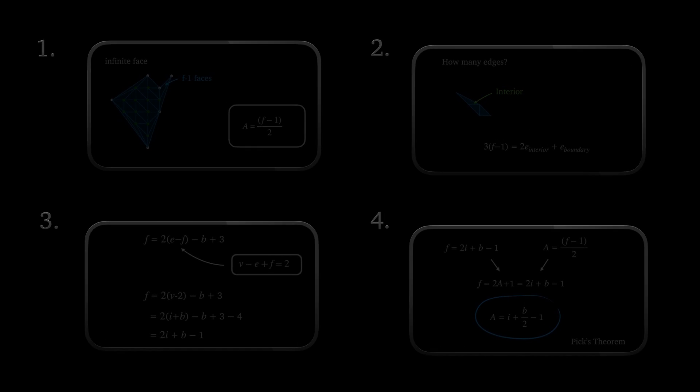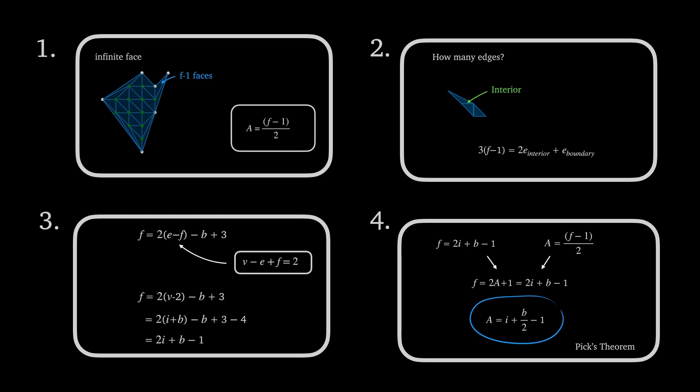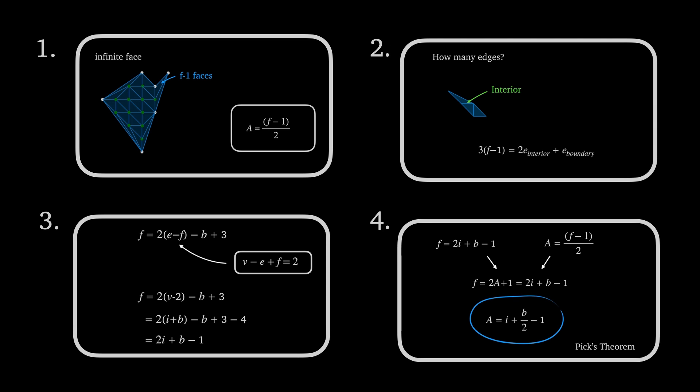Okay, so now we're going to prove Pick's theorem and central to this proof will be Euler's formula for planar graphs. And just to outline the proof before we start, we'll divide the lattice polygon into triangles of equal area, we'll find the number of edges in the triangulated graph, then we'll use Euler's formula to find the relationship between the number of lattice points and the number of faces. From here, Pick's theorem essentially falls straight out.